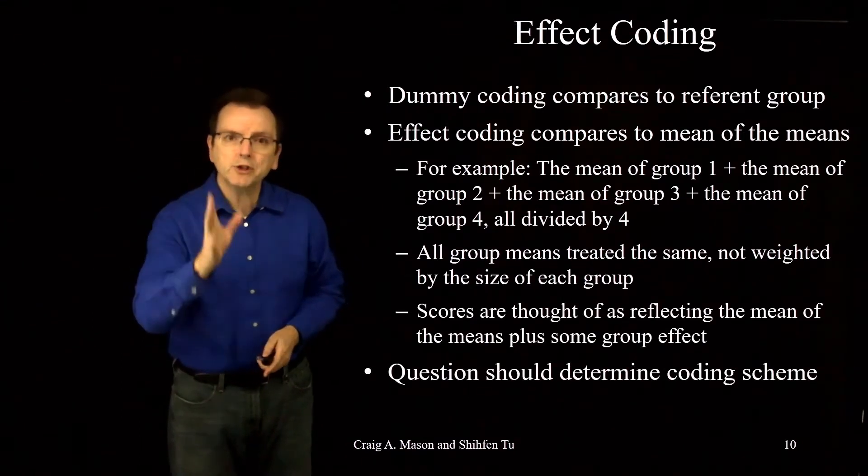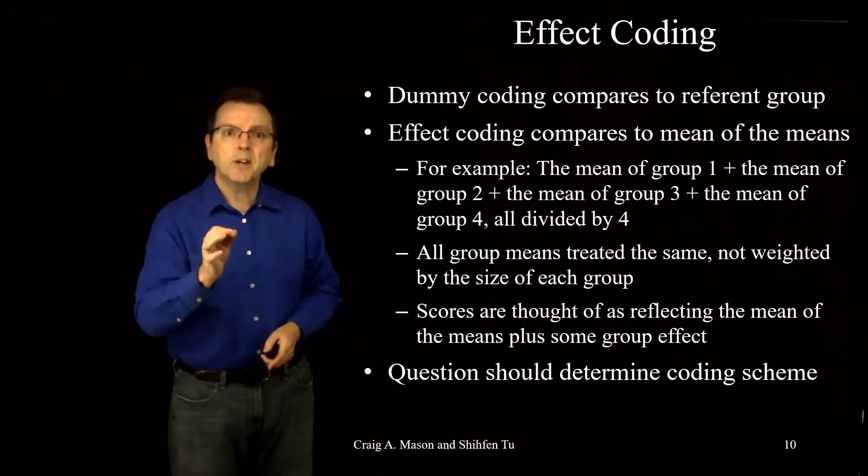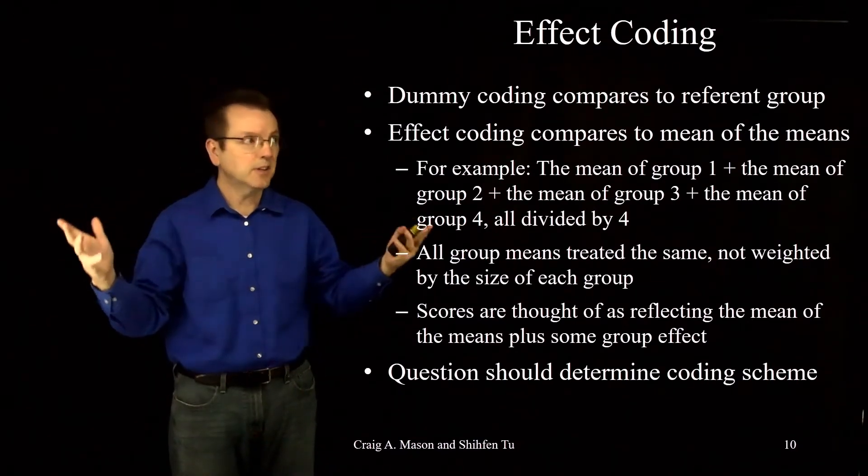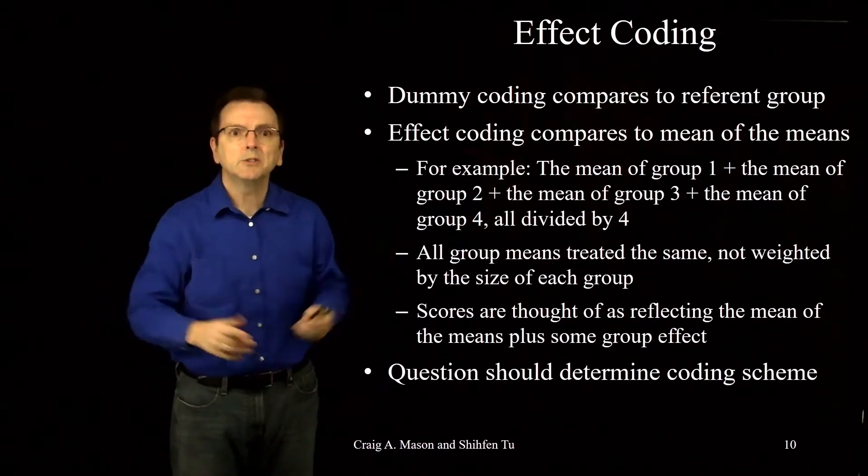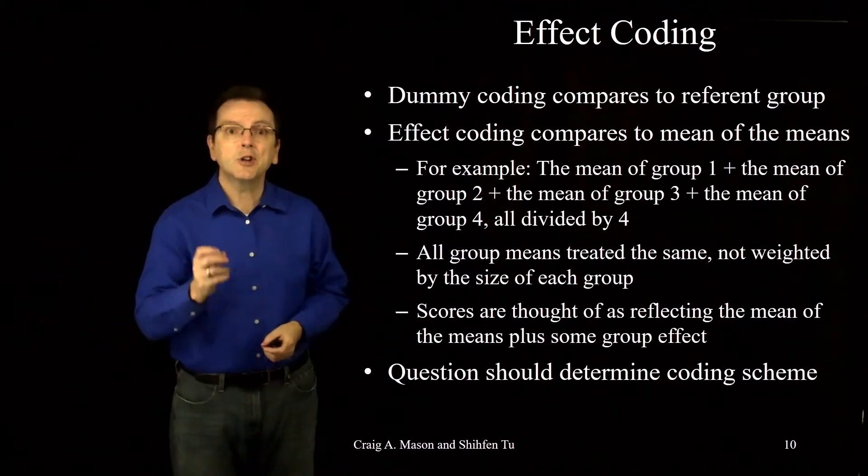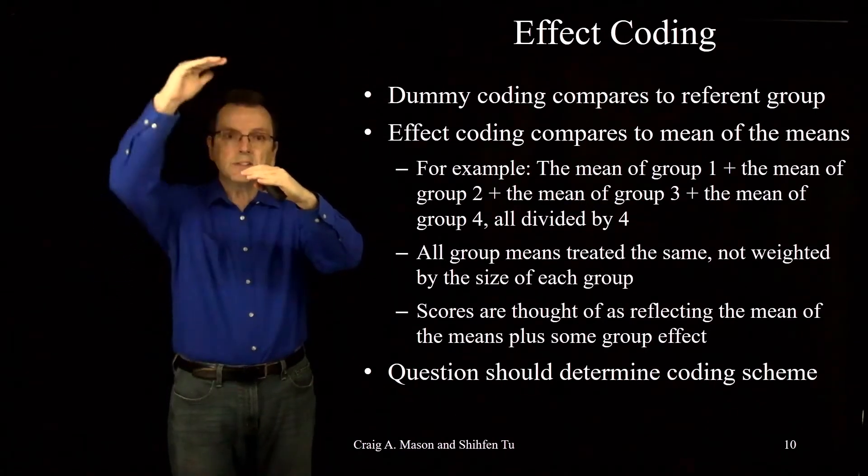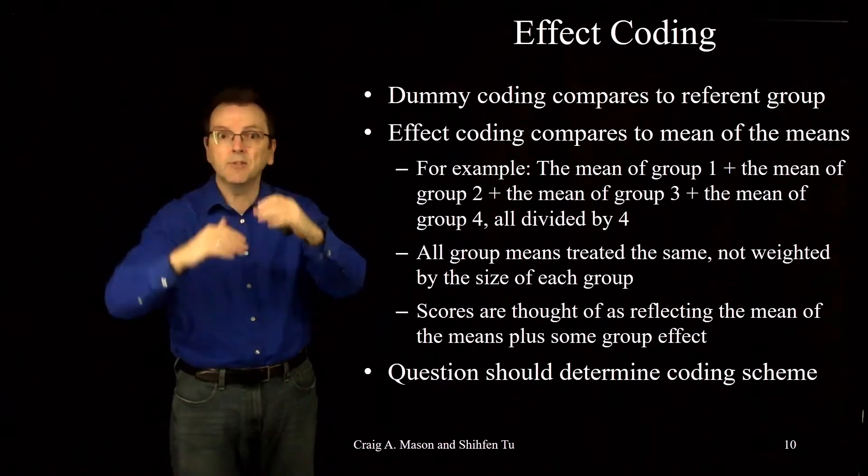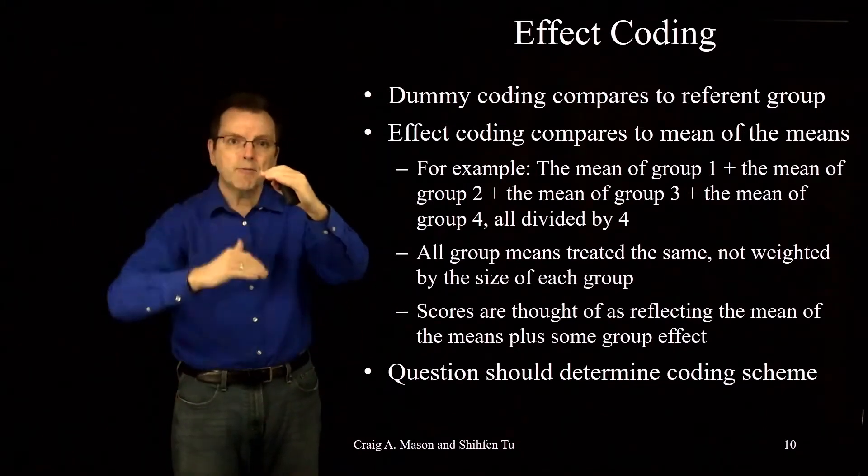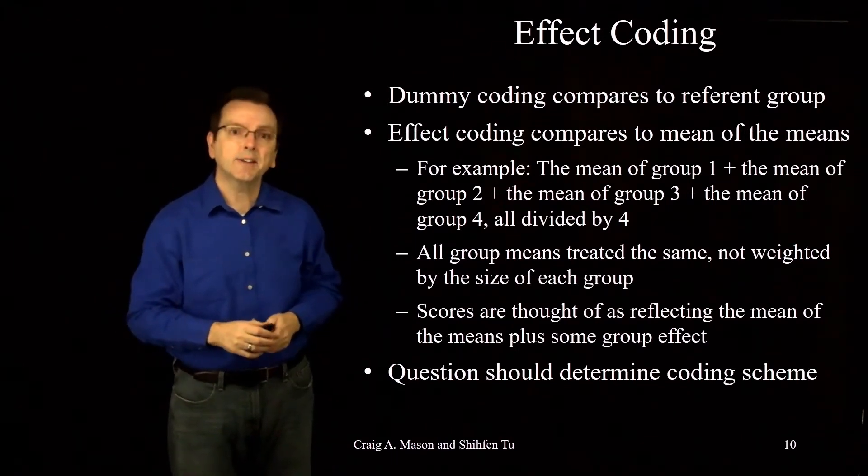Ultimately, your question should determine your coding scheme. Effect coding can be particularly useful when there is no referent, comparison, control, business as usual sort of group. Maybe you want to give everybody an intervention and then determine whether all of the interventions work equally well or do some stand out either positive or negatively. Effect coding lets you compare different intervention effects to that average intervention effect.